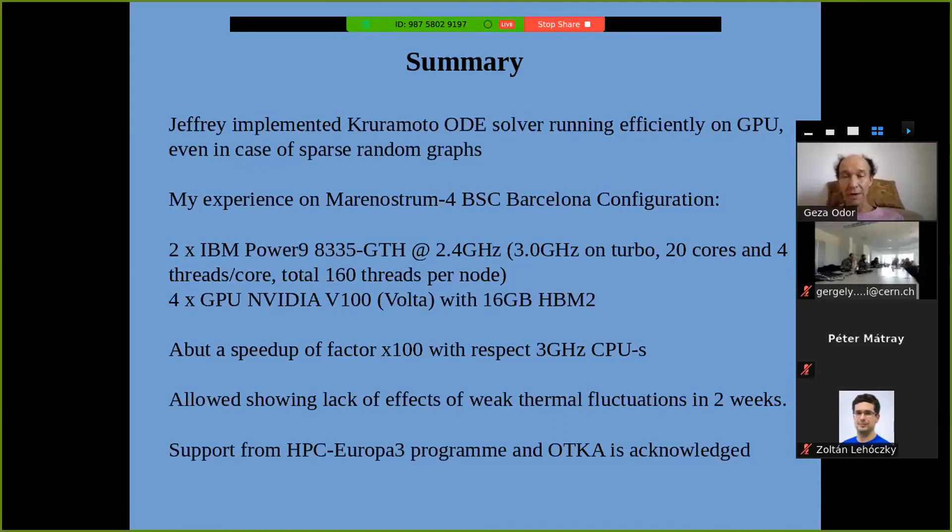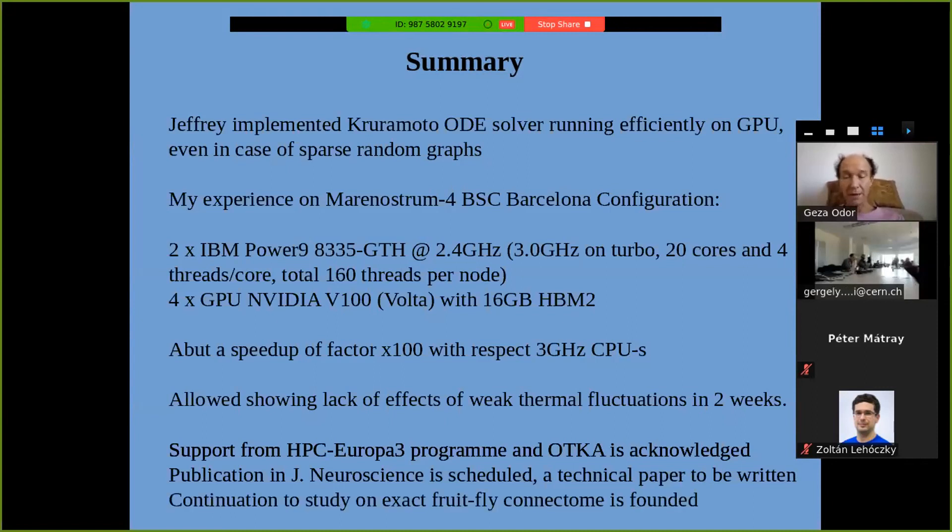We'd like to acknowledge support from the HPC Europe C program also from OTKA and the publication in Neuroscience is scheduled. We want to give a technical paper with Jeffrey and a continuation to study on a connectome of the fruit fly is planned. This has importance because this only has 40,000 nodes but these nodes are exactly determined unlike the ones which we used which are obtained by tract tracing algorithms so it's not fully exact. So thank you for your attention.